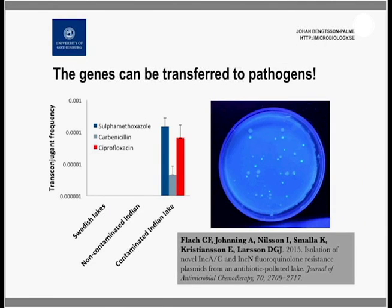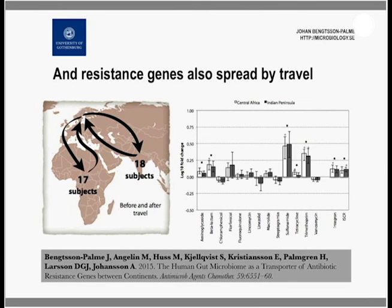Perhaps even more troublingly, when we took bacteria from this lake, we could transfer resistance genes from those bacteria to human pathogens in the lab — pathogens that could potentially cause disease. This means the resistance genes in this lake are actually very close to taking the step from harmless environmental bacteria to dangerous bacteria, or may have already done so. We also know from other studies that antibiotic resistance genes can be spread around the world by travel, even in healthy individuals — meaning the resistance in this lake could be only hours away on an airplane. This truly highlights how the resistance problem is a global issue requiring a global response.